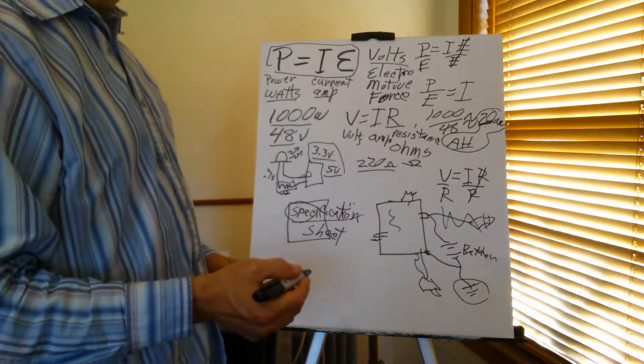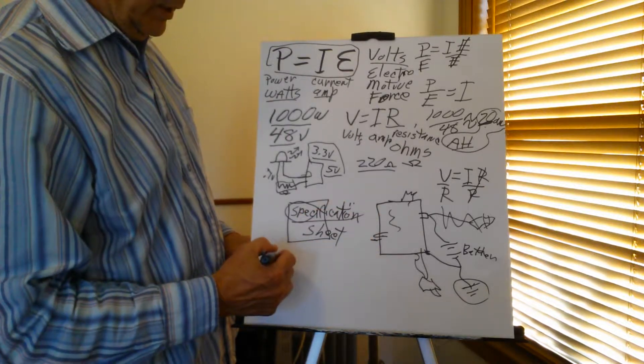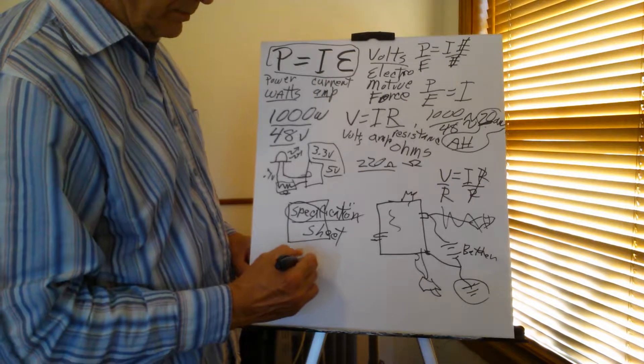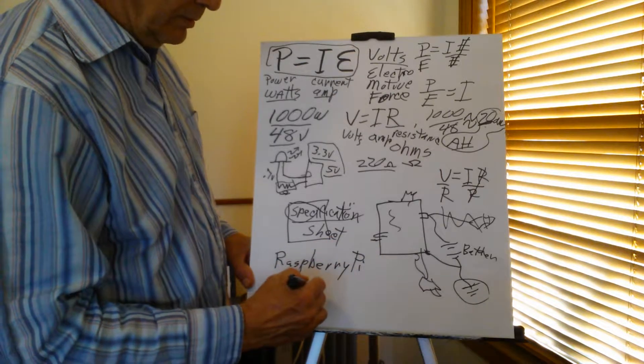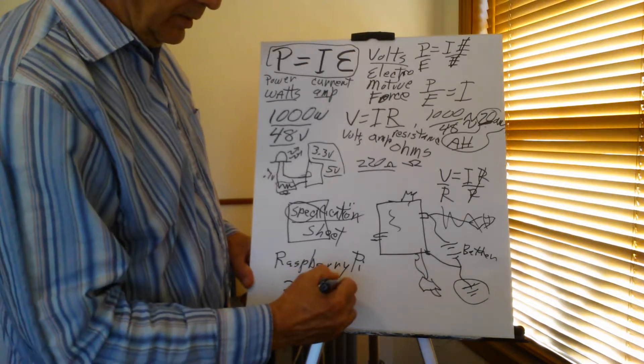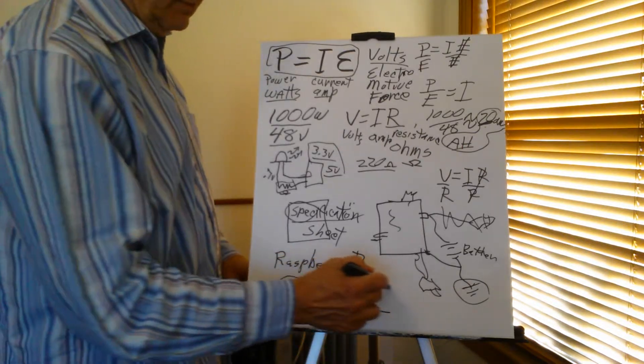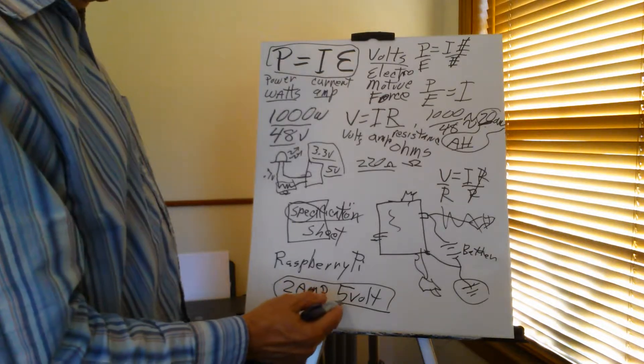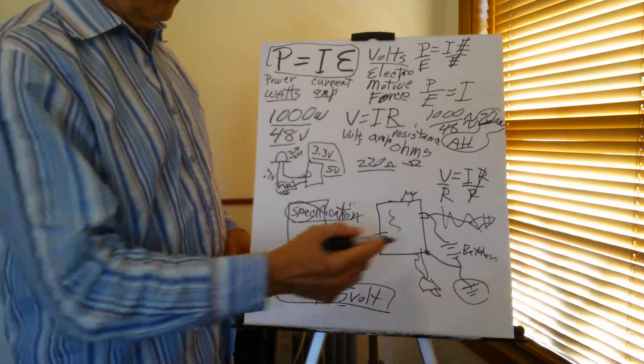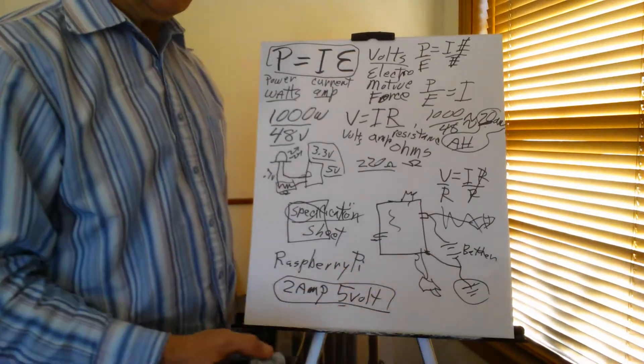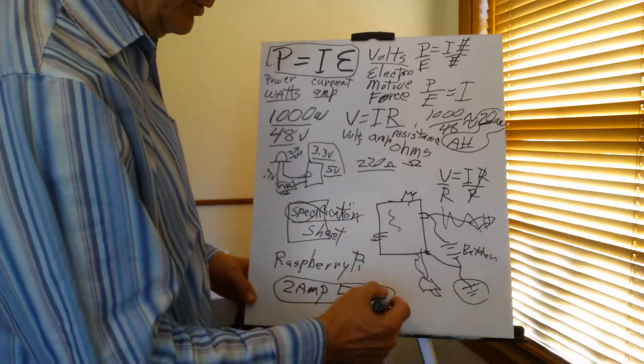So you need to know. Like, for example, a good one to talk about is the Raspberry Pi. They recommend a 2 amp, 5 volt system. 2 amps and 5 volts. And what do we want to know? We want to know what our wattage is. How many watts we need. Because most likely you'll be looking at wattage on something like solar cells. Solar cells tend to be measured in watts. Because you can arrange them up to whatever voltage. Just like batteries.